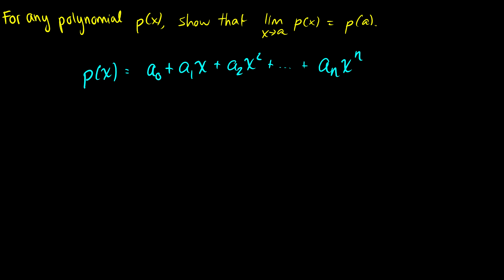If we take the limit as x goes to a, what this means is that we just substitute in the value of x for a. This will be a₀ + a₁ times a + a₂ times a² all the way up to aₙ times a to the n.